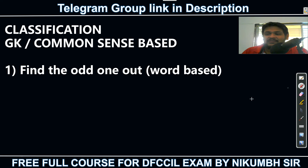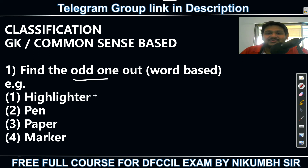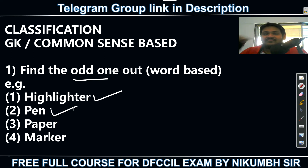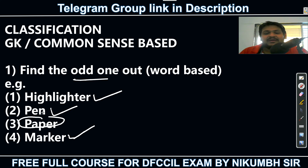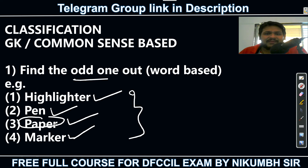For example, we have to find the odd one out among: highlighter, pen, paper, marker. With a highlighter we highlight, with a pen we write, with a marker we also highlight — so paper is different. Paper is the odd one out. This is a simple word-based GK question. The second type is number-based odd one out.